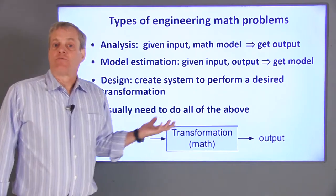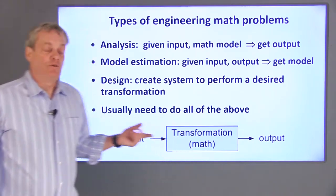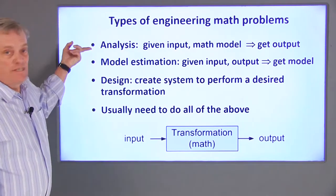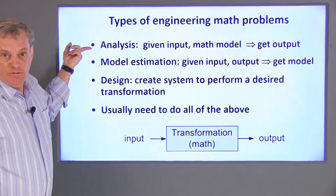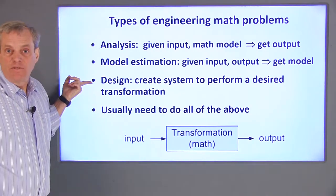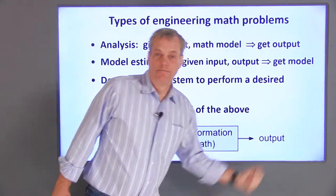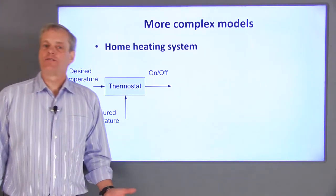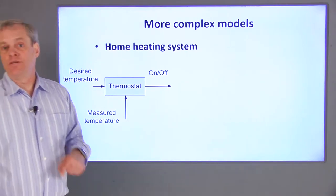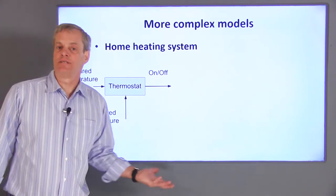Most engineering tasks require all of the above. We can use test data to identify models for components. We can use these data to predict the component's response to expected inputs, and then redesign the components as necessary to obtain a desired behavior. Now let's look at how the relationships between a system's input and output can be used to develop a more complex system design.